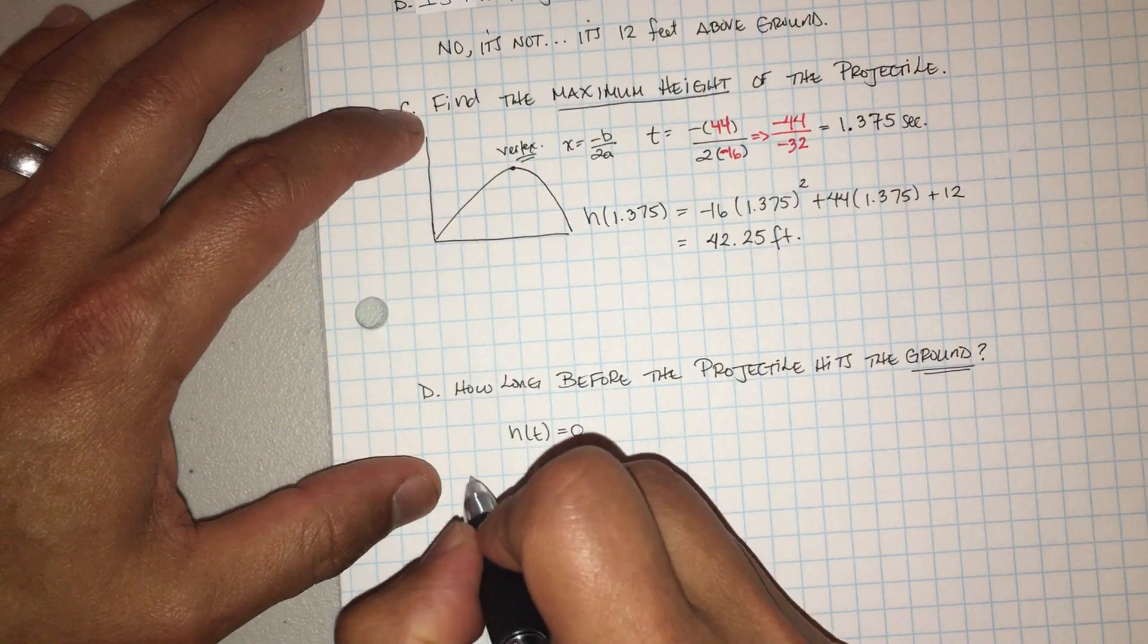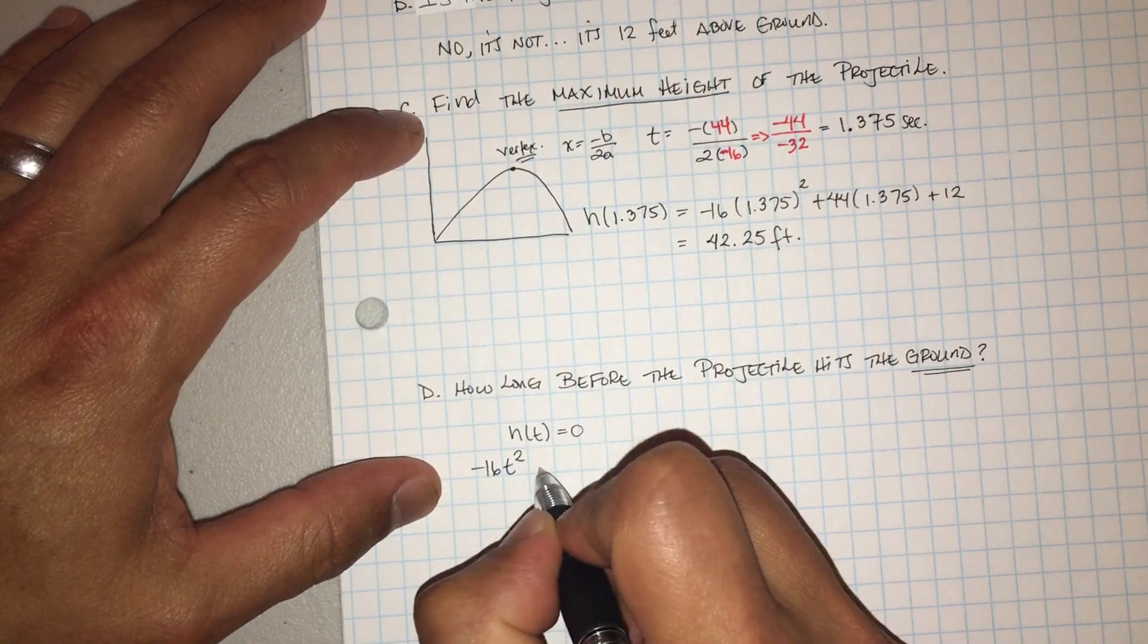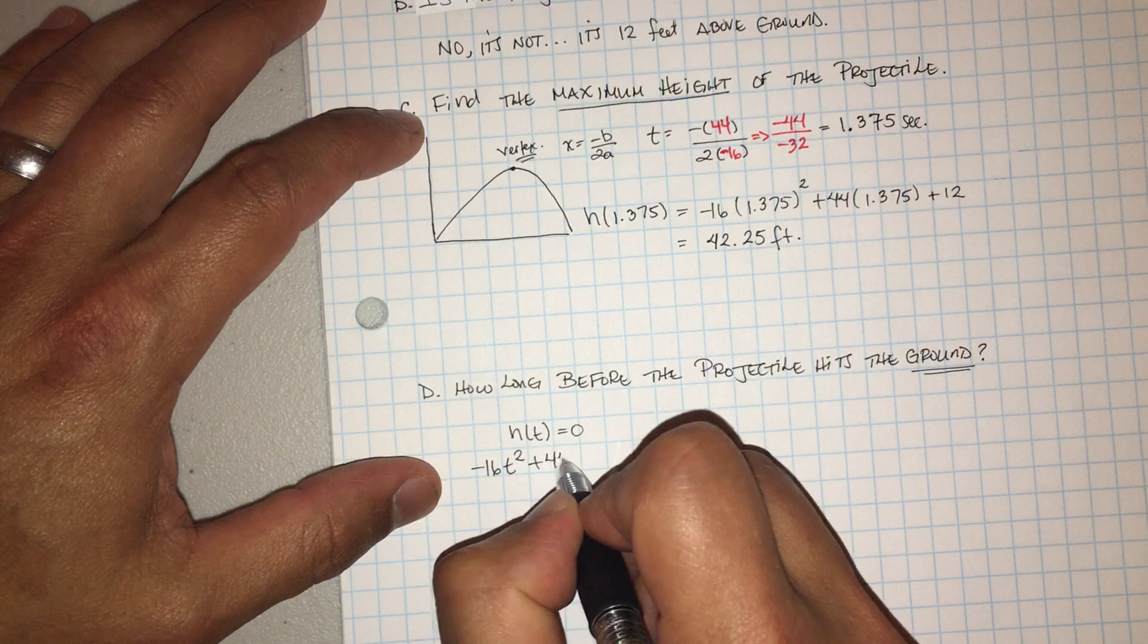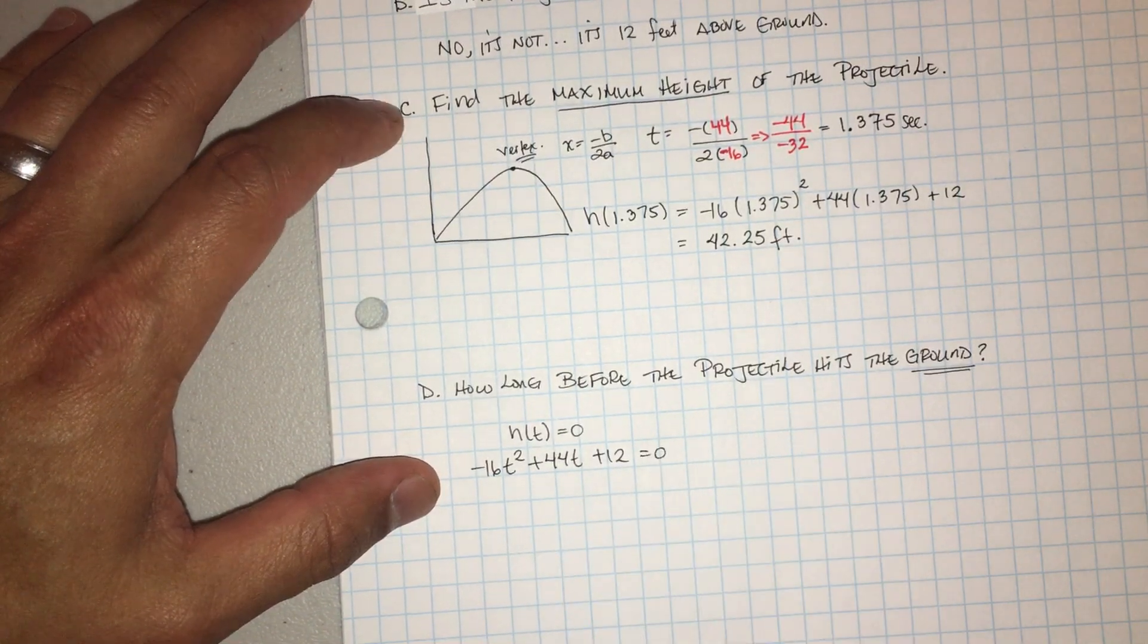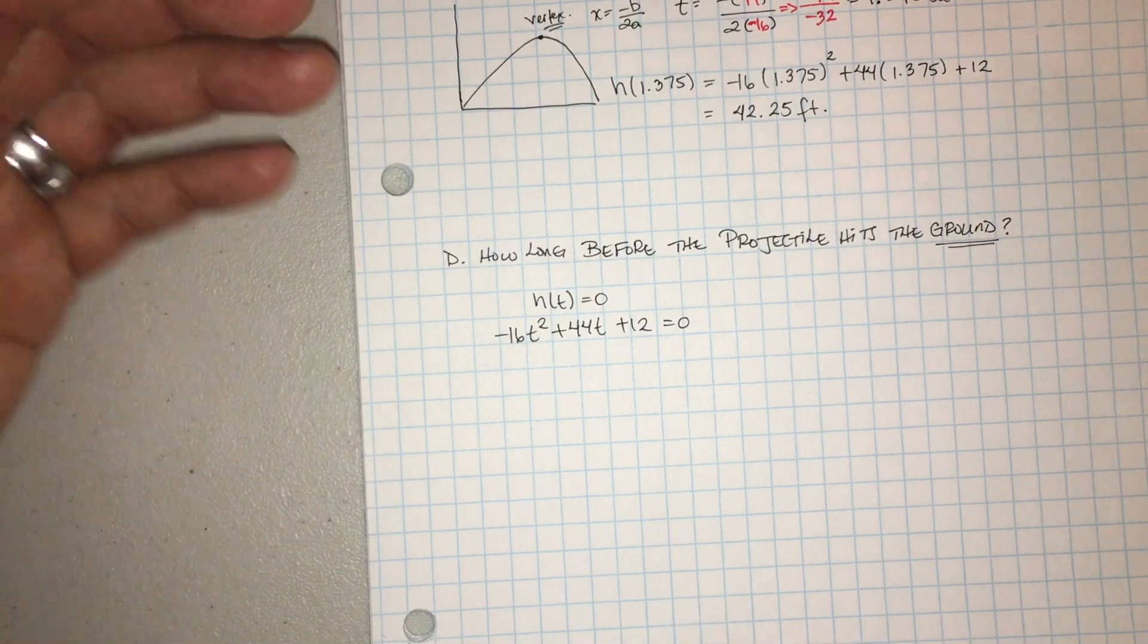So we're going to go ahead and do this. Vamos a hacer esto. Negative 16t squared plus 44t plus 12, más 12, igual a cero. So now what do I have to do? Ahora que tengo que hacer? Now I have to factor it and solve.